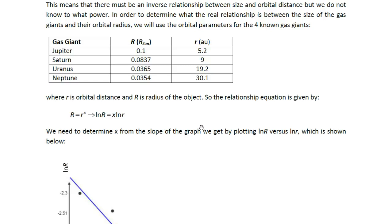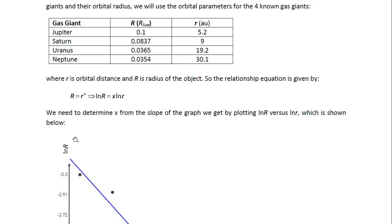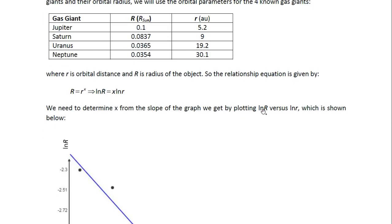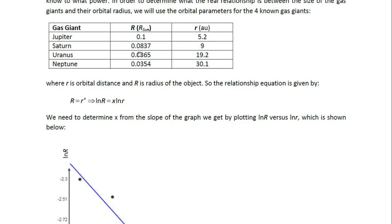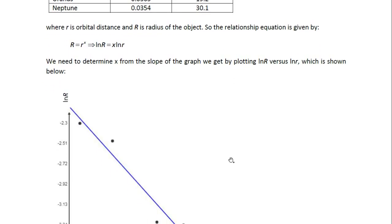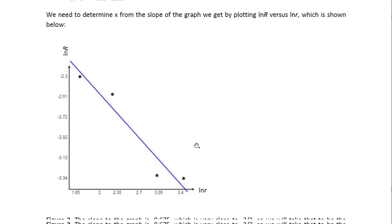So the relationship equation that we now have is capital R, which is their radius, is equal to r to the power of x. We don't know what x is, we have to find out what it is. So you take ln on both sides, that's natural logarithm on both sides. And that means we can then write the equation in this form: ln R equals x ln r. And now we can determine x from the slope of the graph we get by plotting ln R versus ln r, which is shown below. I actually had to calculate what ln R and ln r were. I just didn't want to put everything on that table, it gets a bit crowded there.